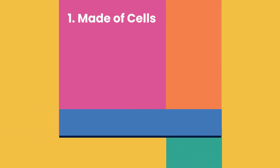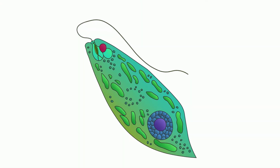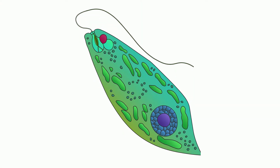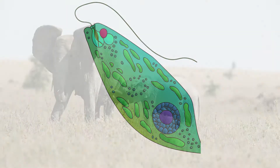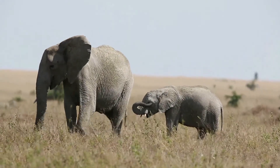The first characteristic of living things is that all living things are made of cells. An organism can be made up of a single cell or of trillions of cells.